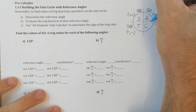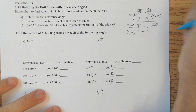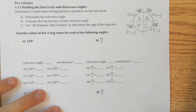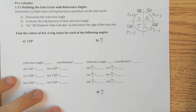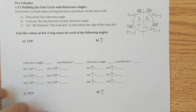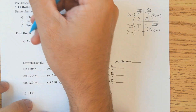In quadrant three, everything's negative — x and y are both negative. C stands for quadrant four, where x is positive and y is negative. Now, there are four things we need to know: our quadrantals, our 30-degree family, our 45-degree family, and our 60-degree family.